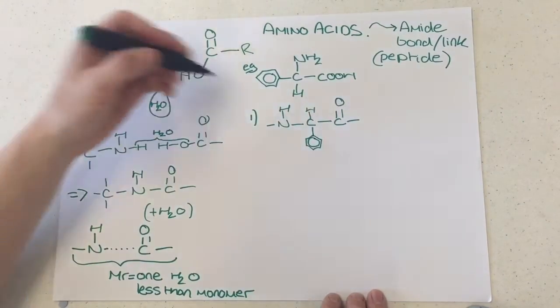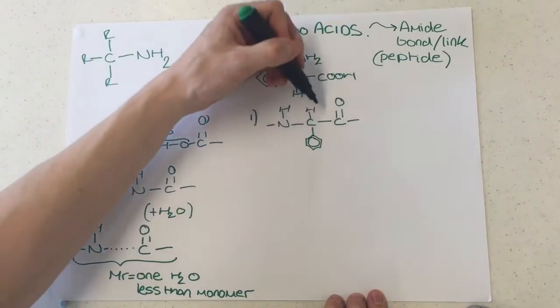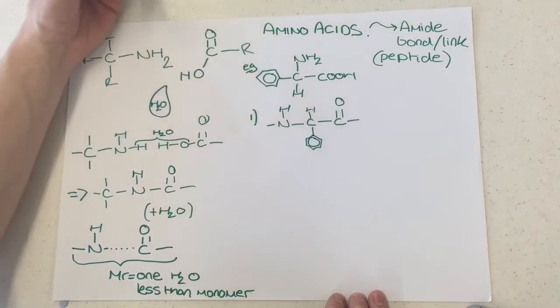Our repeat unit. Now the repeat unit, or the repeating unit, however you want to describe it, should here, if we added it up, it would be one H2O less than the monomer, the amino acid that I used up here.